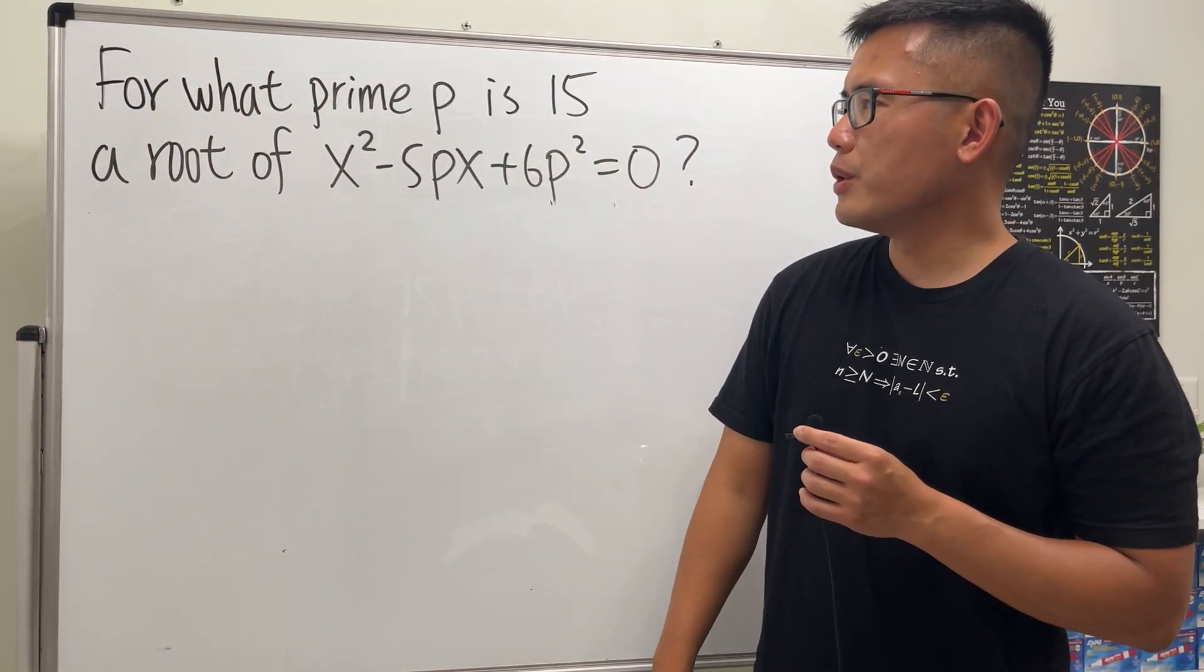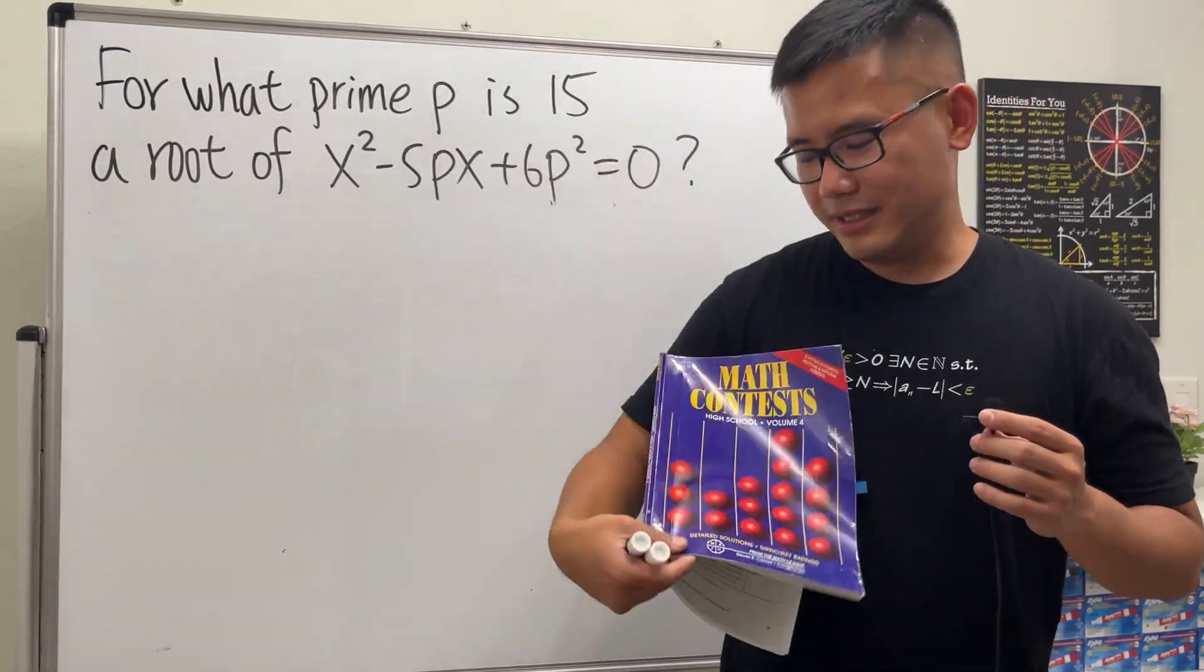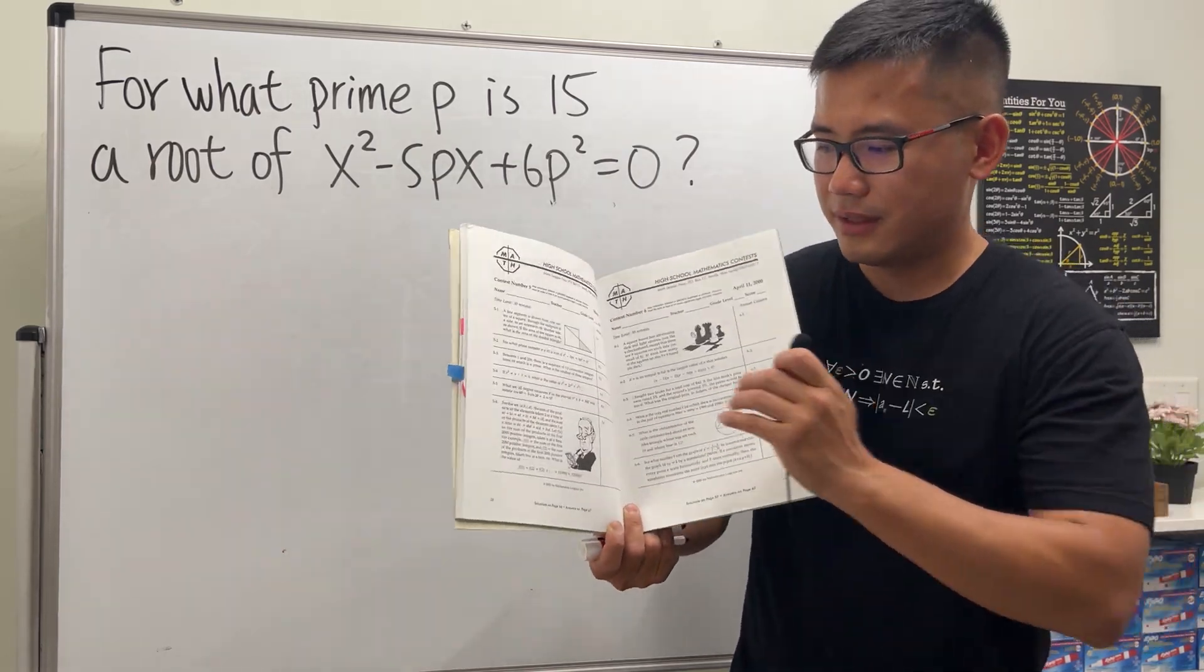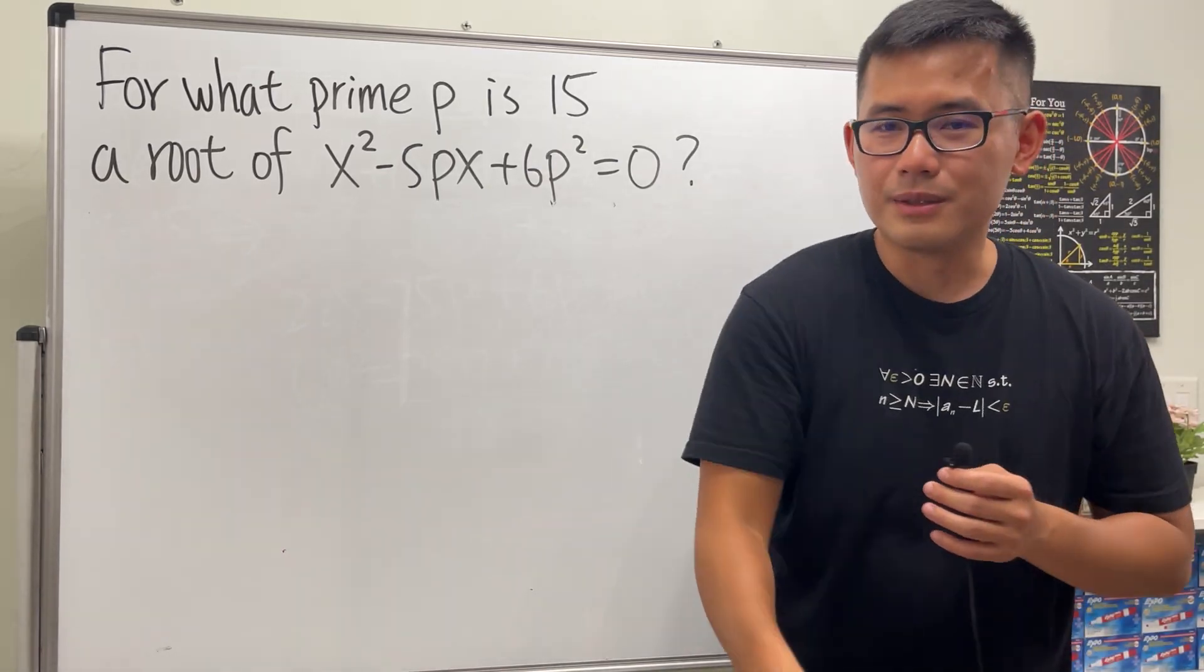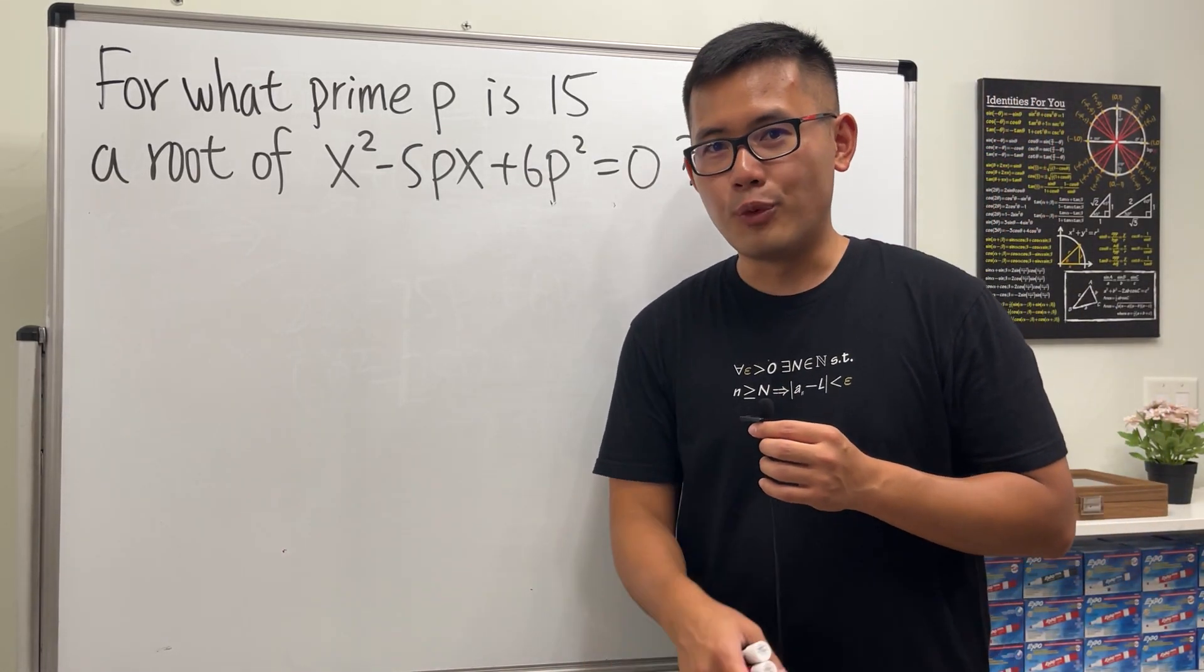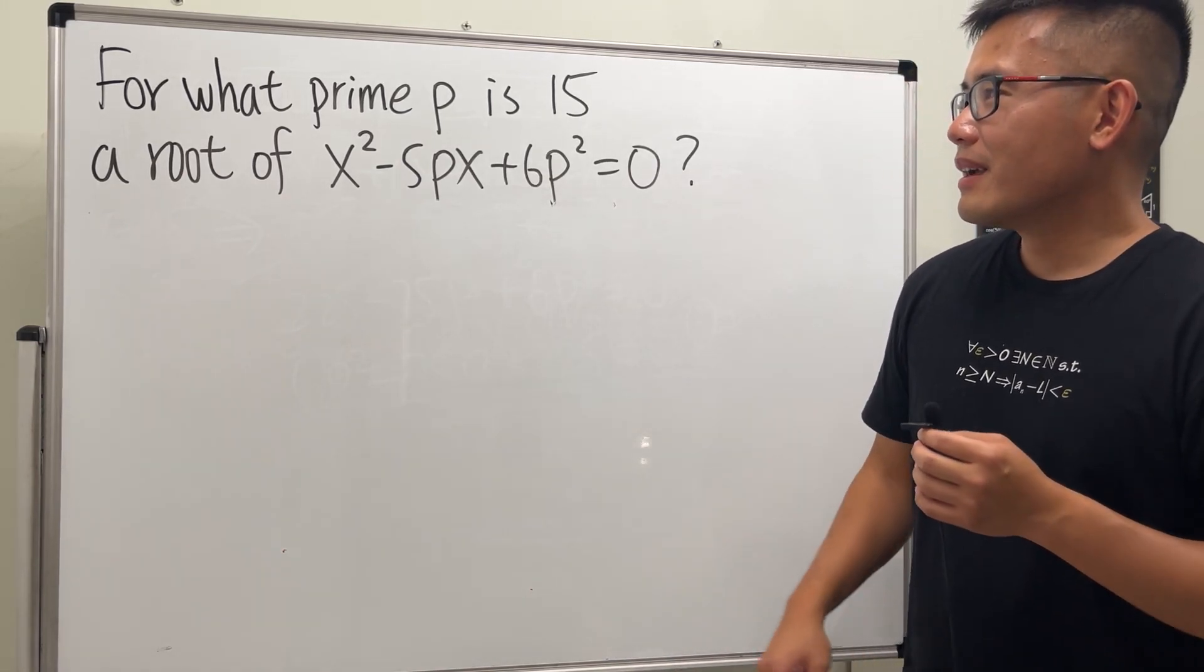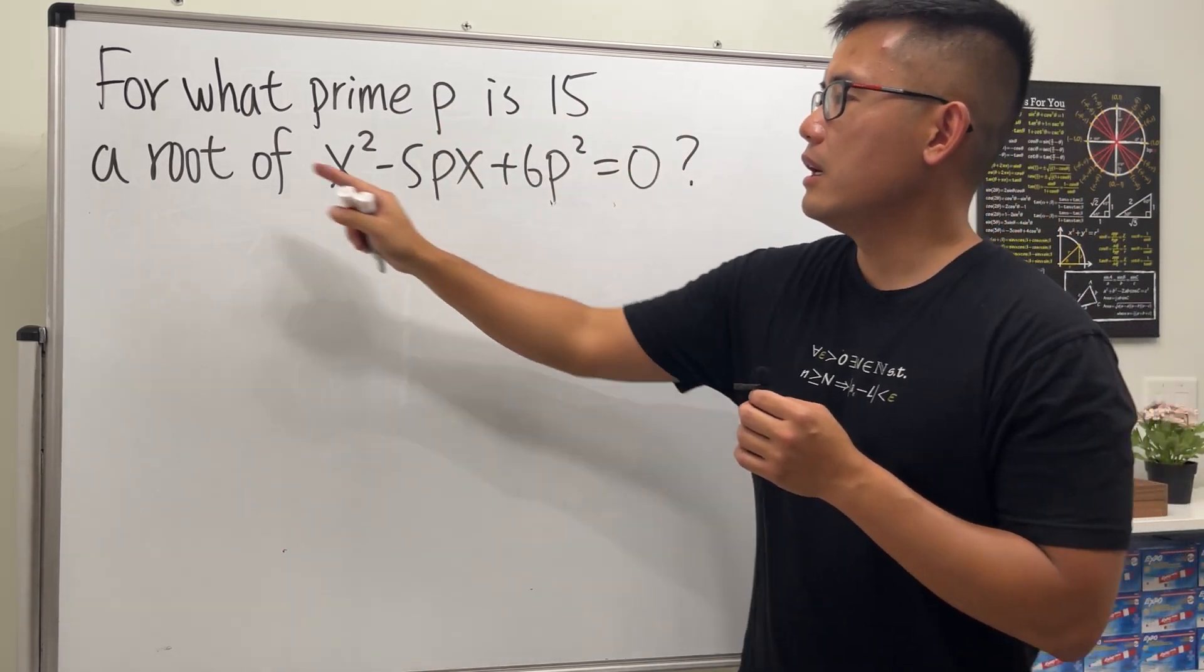Here I have a very interesting algebra question for you. I got this question from this book again - this is the Math League Contest from the year 2000. I really like this book because I did a few of them when I was in high school a long time ago. Anyway, the question is asking us: for what prime P is 15 a root to this quadratic equation x² - 5Px + 6P² = 0?